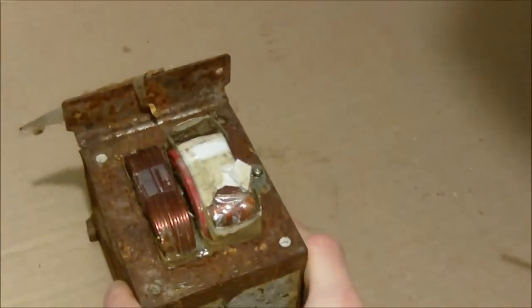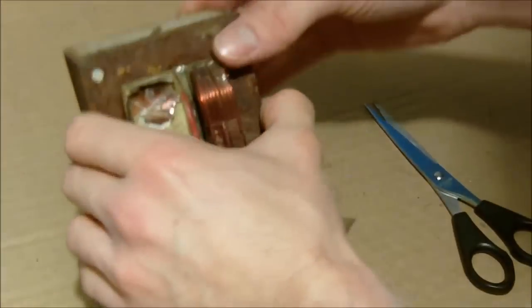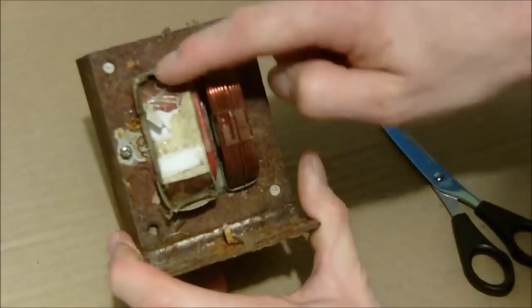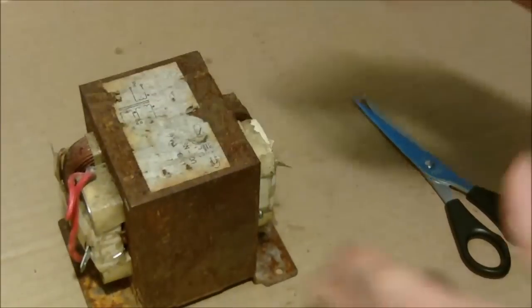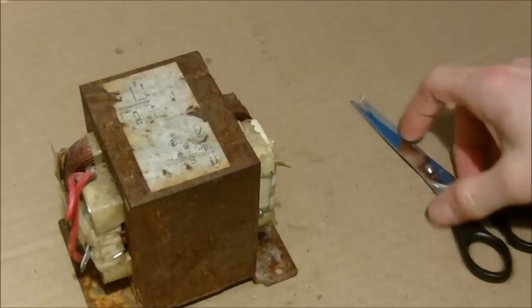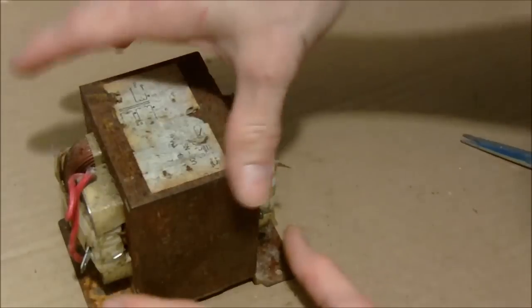So this is right now a step-up transformer. Your primary is the thick windings and the secondary is the little thin windings with many turns. There's a lot more turns in the secondary, so that's going to step up the voltage. This transformer is about 2,000 volts, so it's from 120 volts to about 2,000 volts, maybe a little more than that.